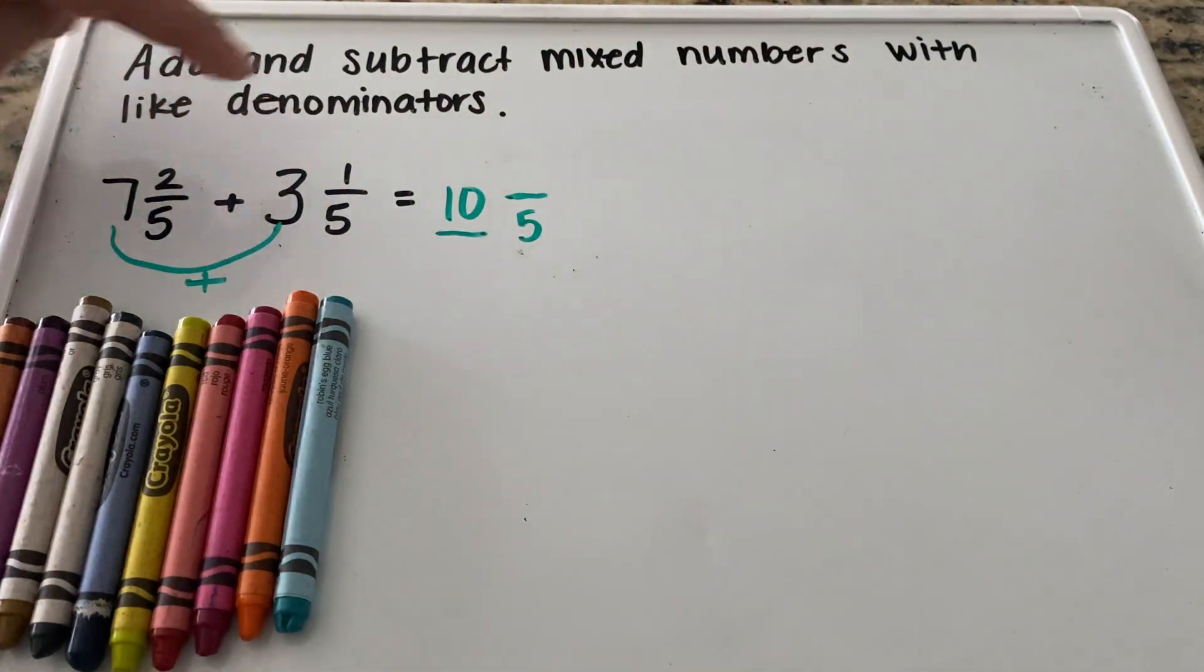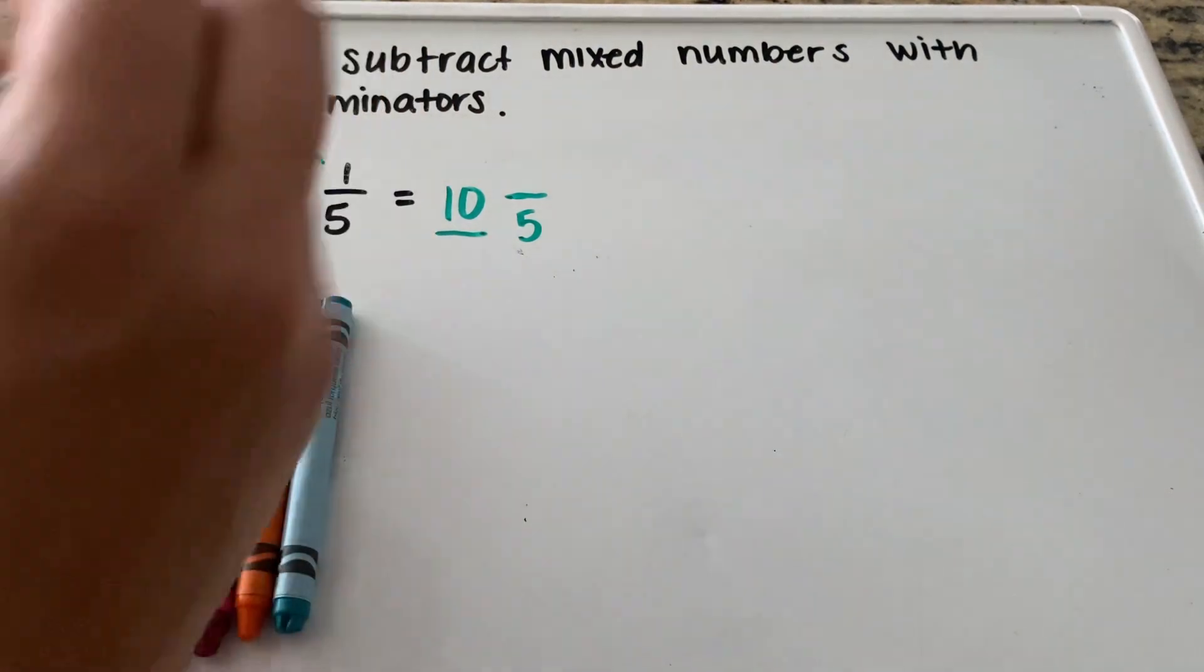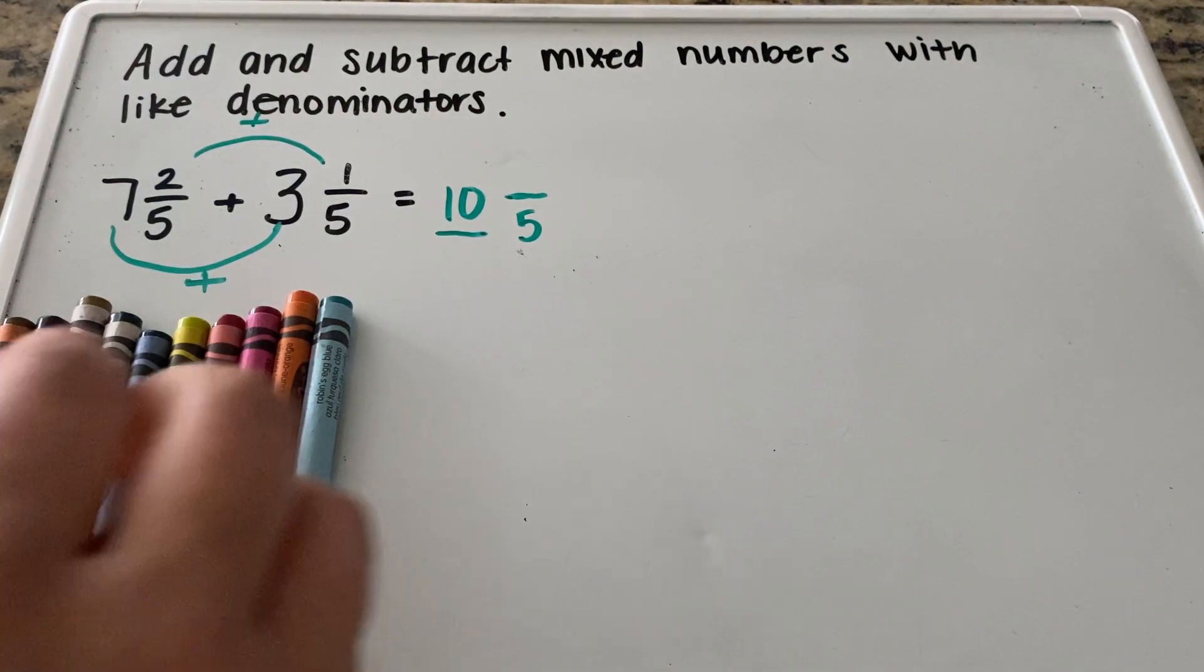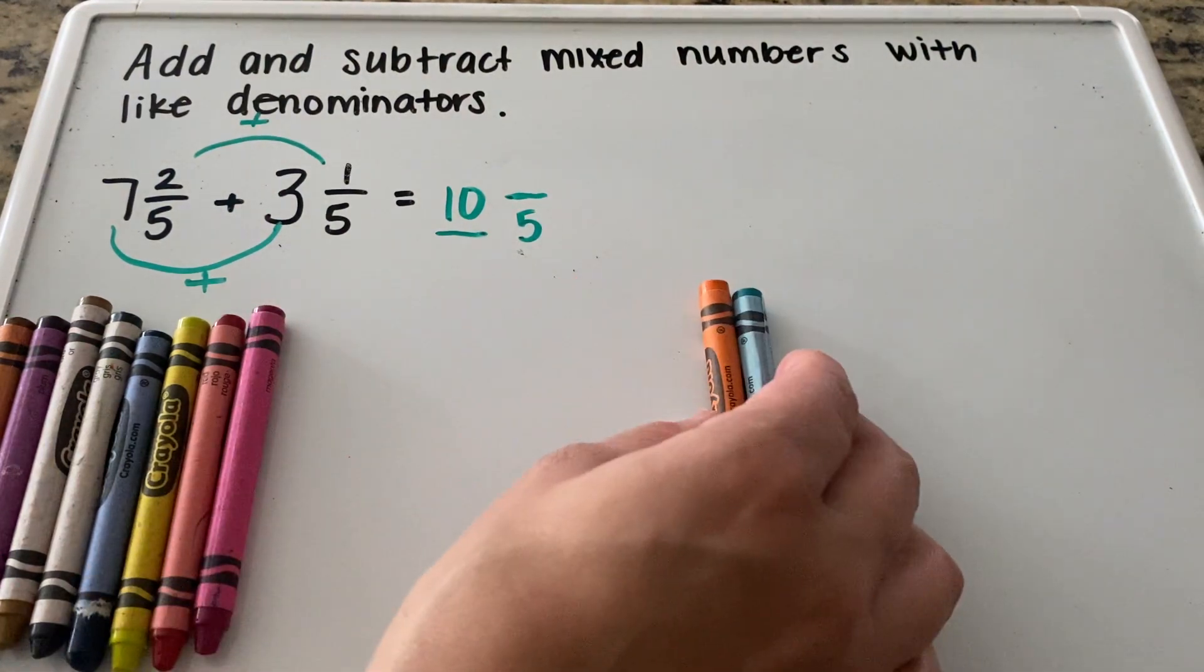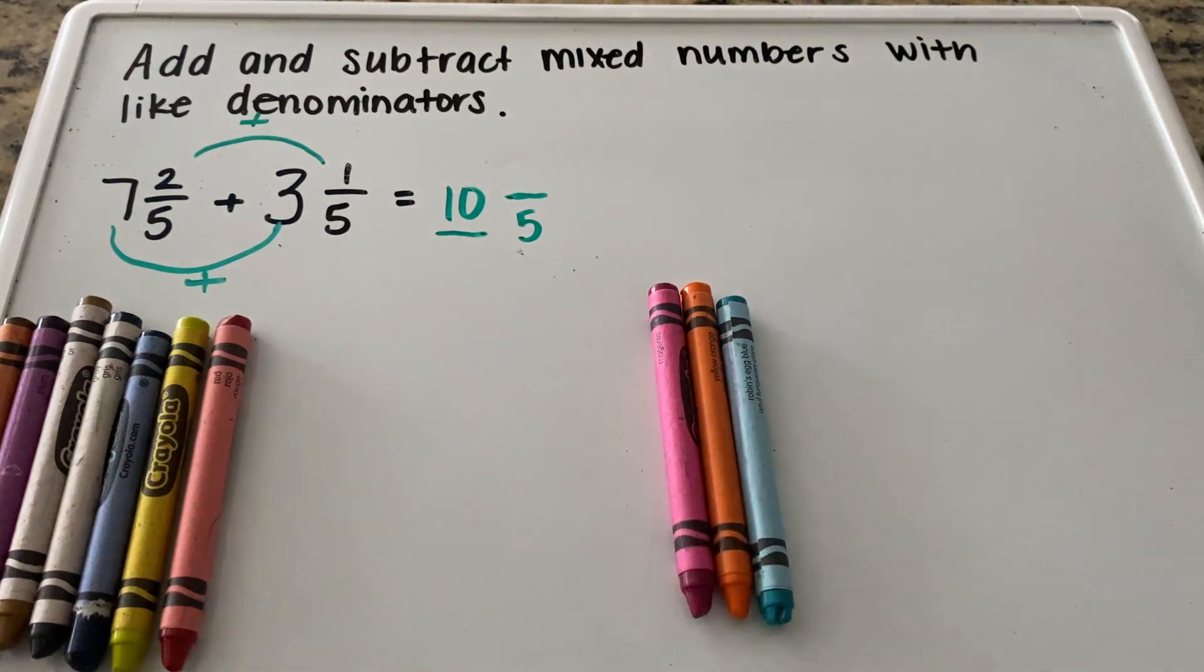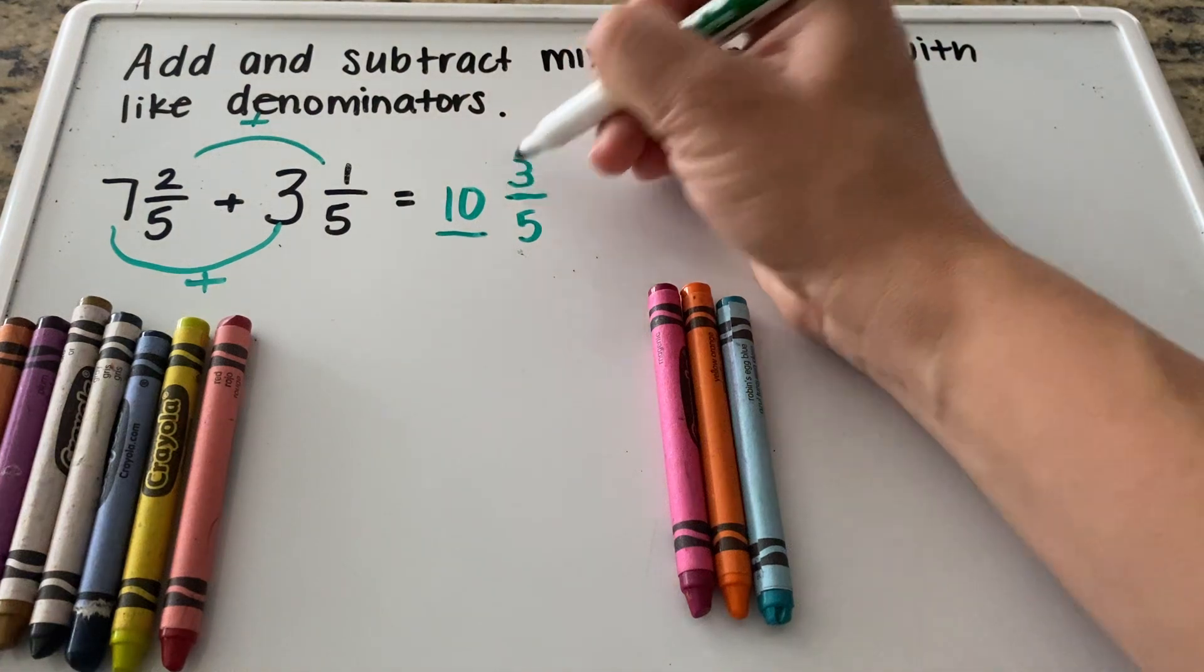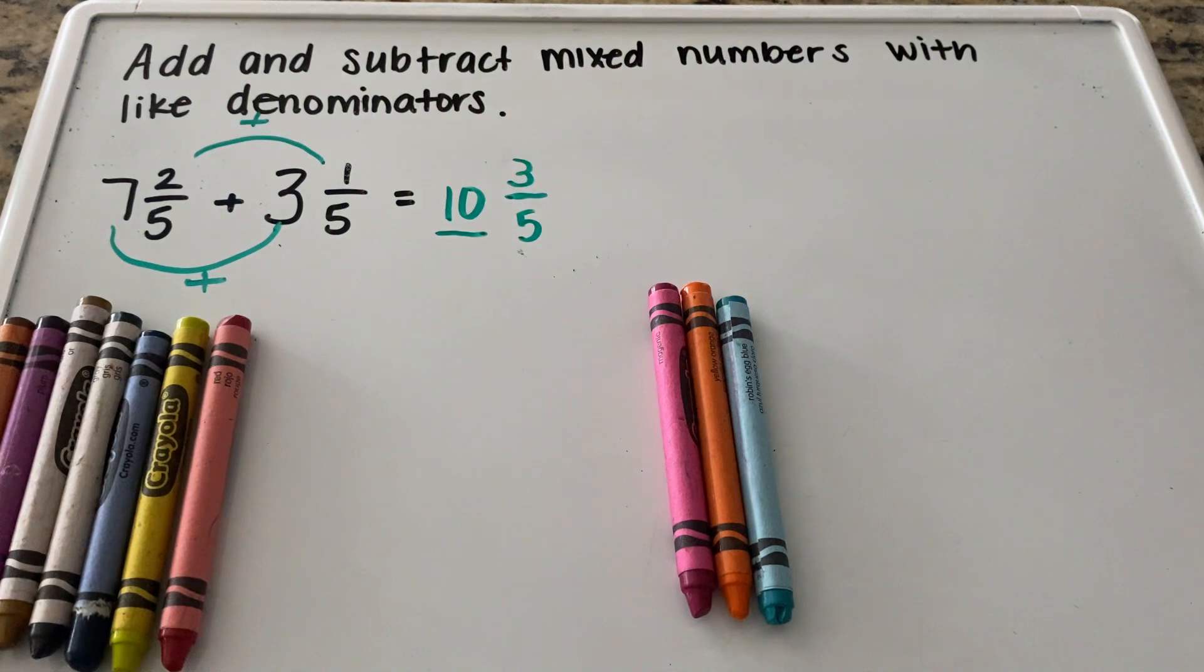Then we're going to take our numerators on top. We have our two and our one and we're going to add those two together. We can use the crayon example again. So I have one, two crayons plus one more crayon. That gives me three. So two plus one on top is three. And so in this case our answer is going to be 10 and 3/5.